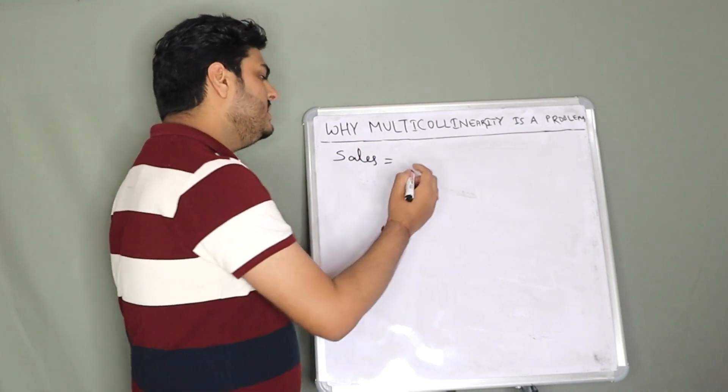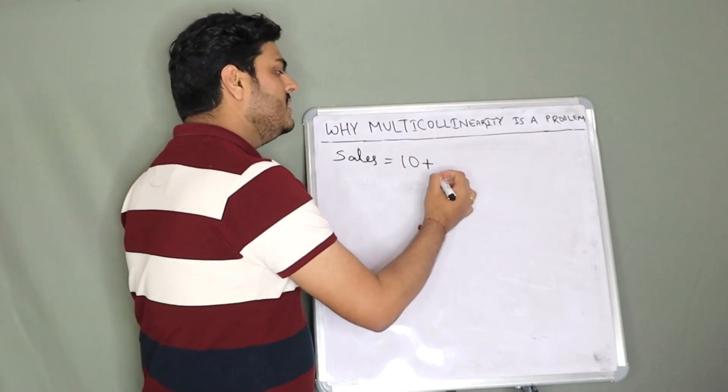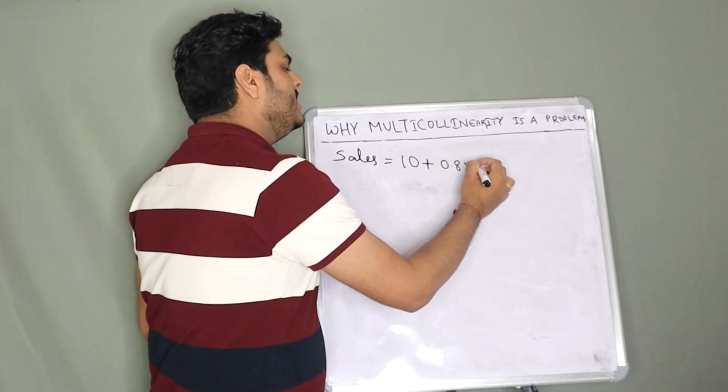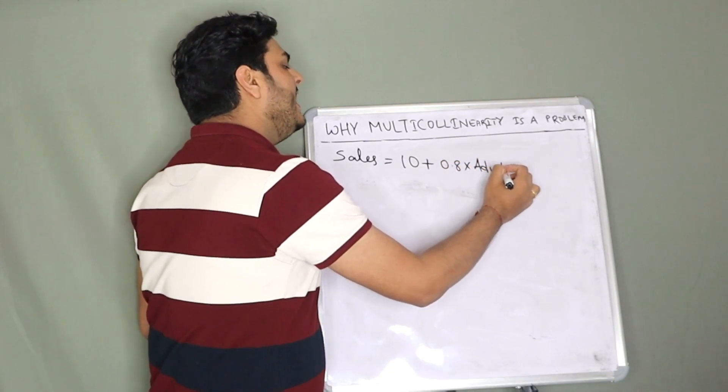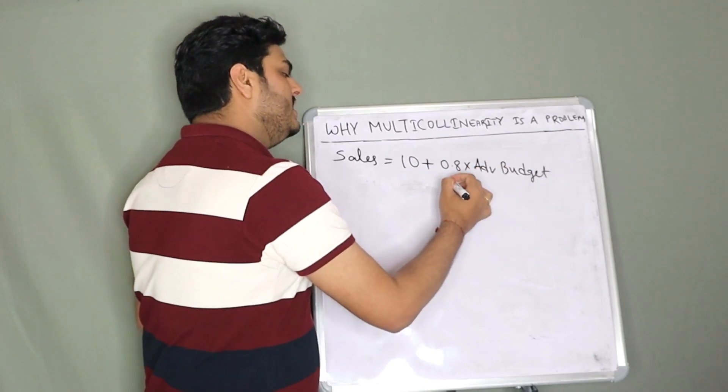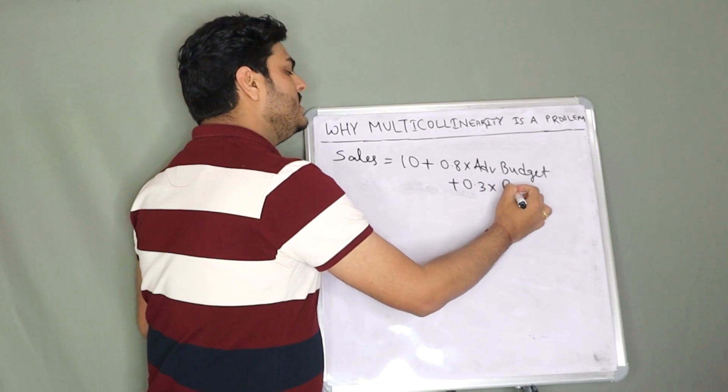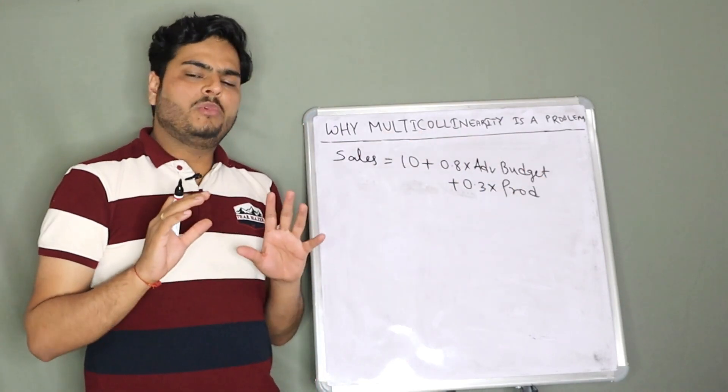Sales equals 10 plus 0.8 times advertisement budget plus 0.3 times production quantity. Just a simple linear regression equation.